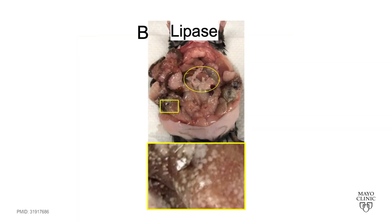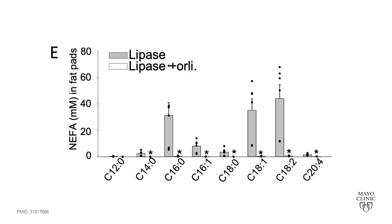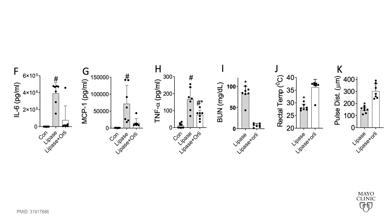In Figure 2, we learned that pancreatic lipase injection into visceral fat can itself hydrolyze the visceral fat, generate NEFA like oleic acid, shown here as C18-1, and cause systemic inflammation and organ failure.